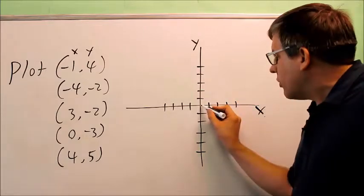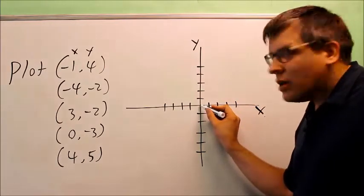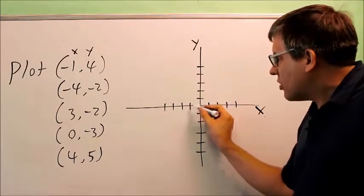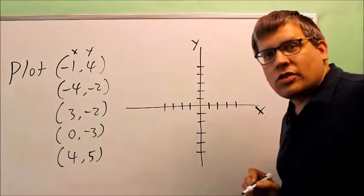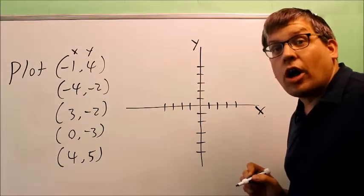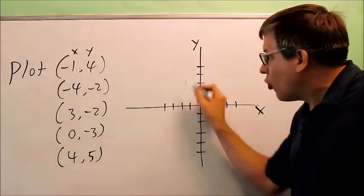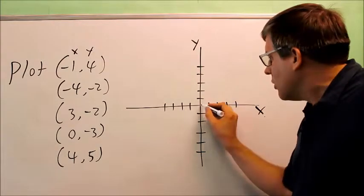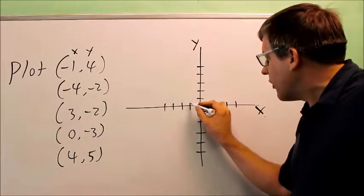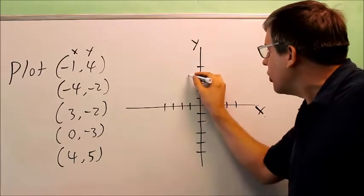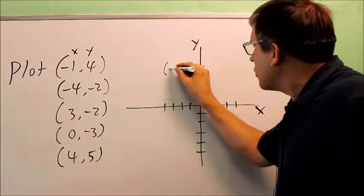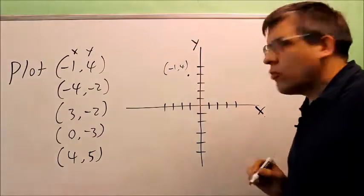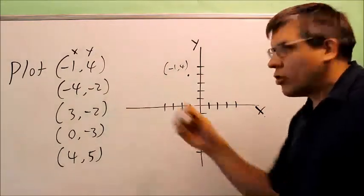So if I want to plot negative one, four, I start at the center, zero zero, and I go one place to the left because the X coordinate is negative, and I go up four units because the Y coordinate is positive. So I go one to the left and up four units — right here is where negative one, four is.